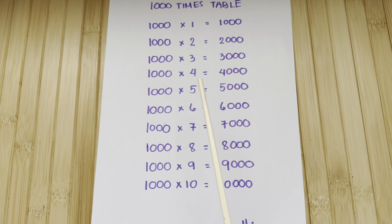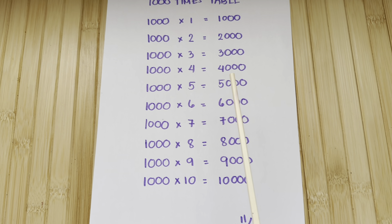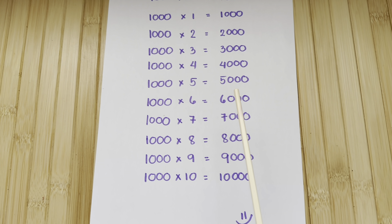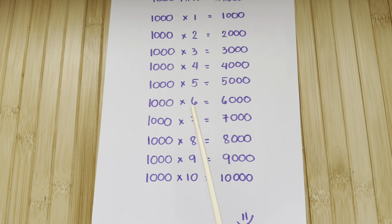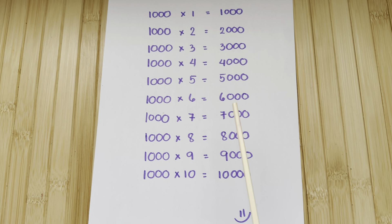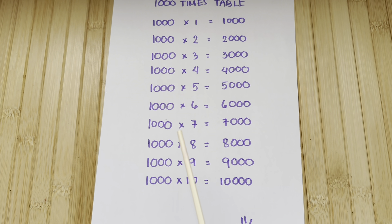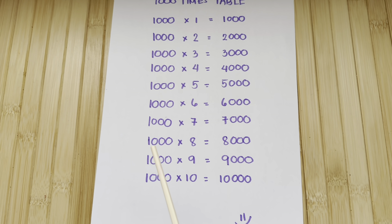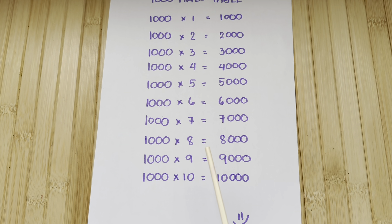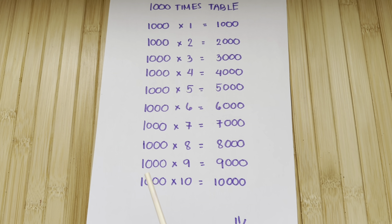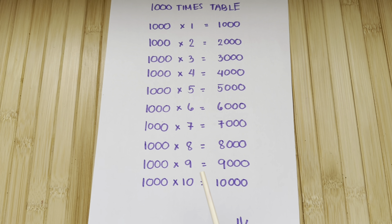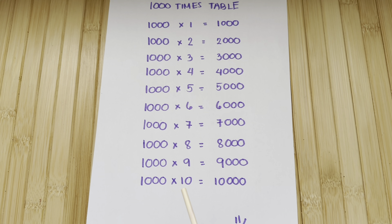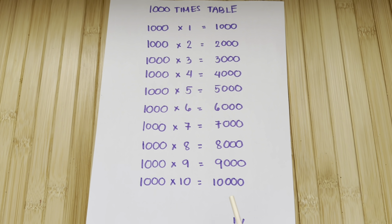1,000 times 4 is equals to 4,000. 1,000 times 5 is equals to 5,000. 1,000 times 6 is equals to 6,000. 1,000 times 7 is equals to 7,000. 1,000 times 8 is equals to 8,000. 1,000 times 9 is equals to 9,000. And lastly, 1,000 times 10 is equals to 10,000.